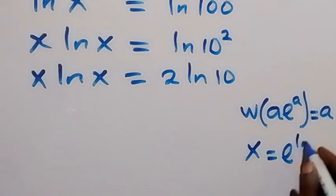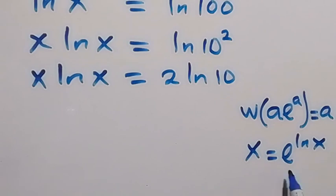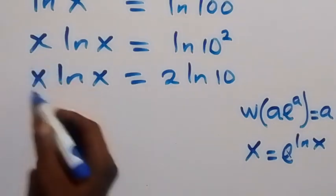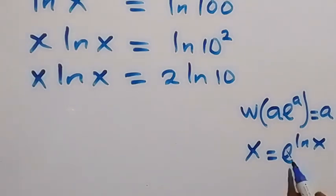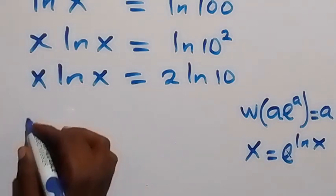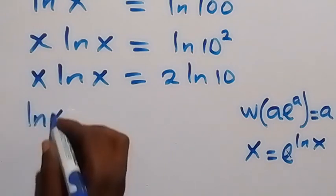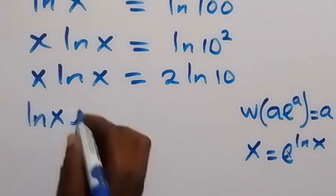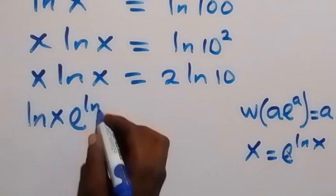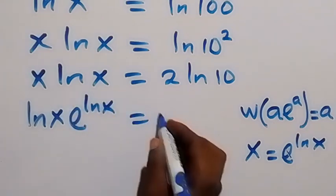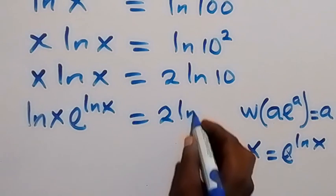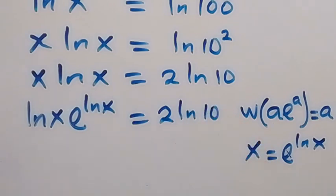...exponent ln x. That's another way of writing x because exponent will cancel ln and we are going to have only x left there. Now from here we can replace this x as exponent ln x, and I can write this as ln x the exponent ln x now in place of x, which equals to 2 ln 10.